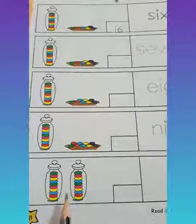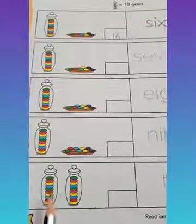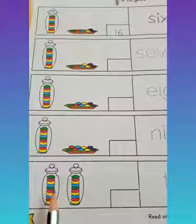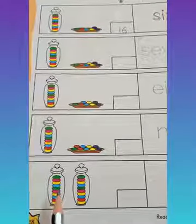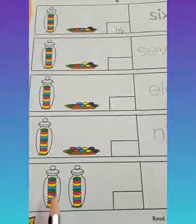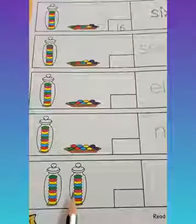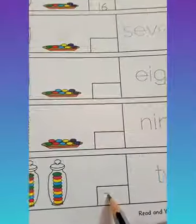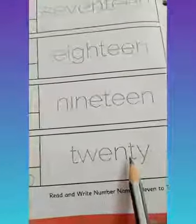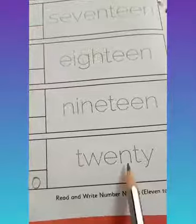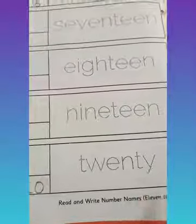Now here I can see two jars. What does this mean? In one jar how many gems? 10. So in two jars, let's use the skip counting method. 10 and 20. So we will write the number 20 here and trace the spelling and repeat. T, W, E, N, T, Y. 20. I hope you all understood how to count objects and similarly how to say the number name. Thank you.